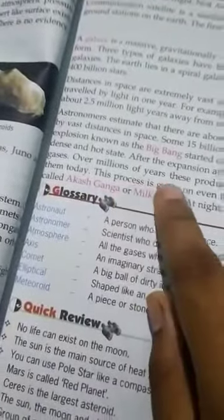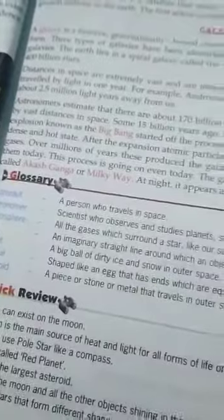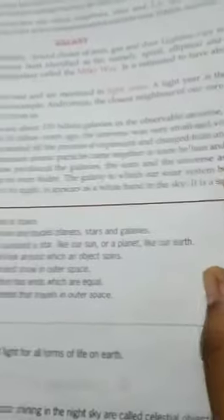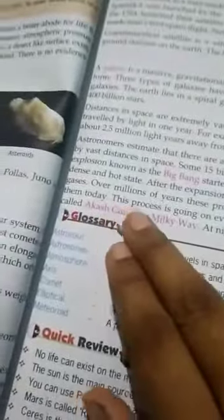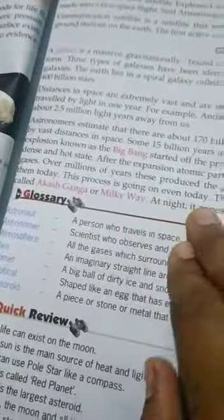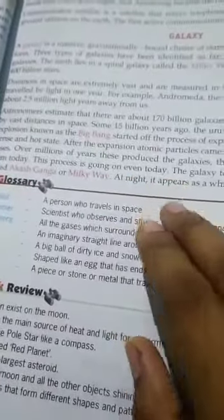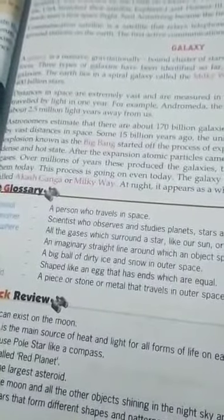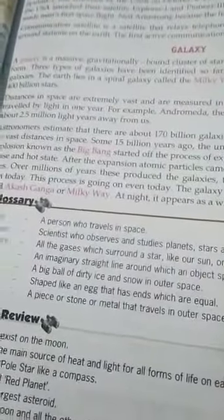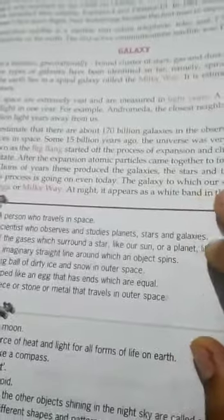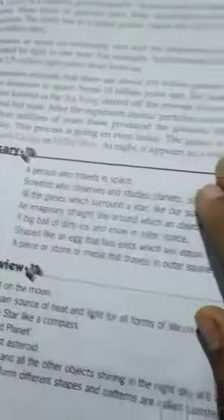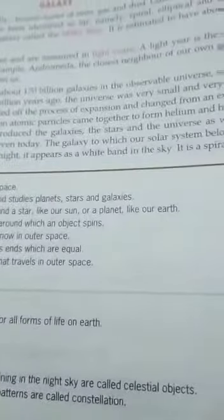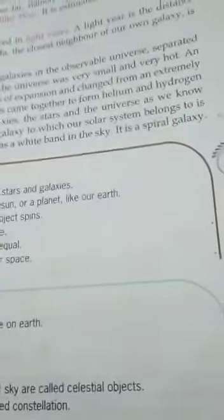This process is going on even today. The galaxy to which our solar system belongs is called Akash Ganga or Milky Way.